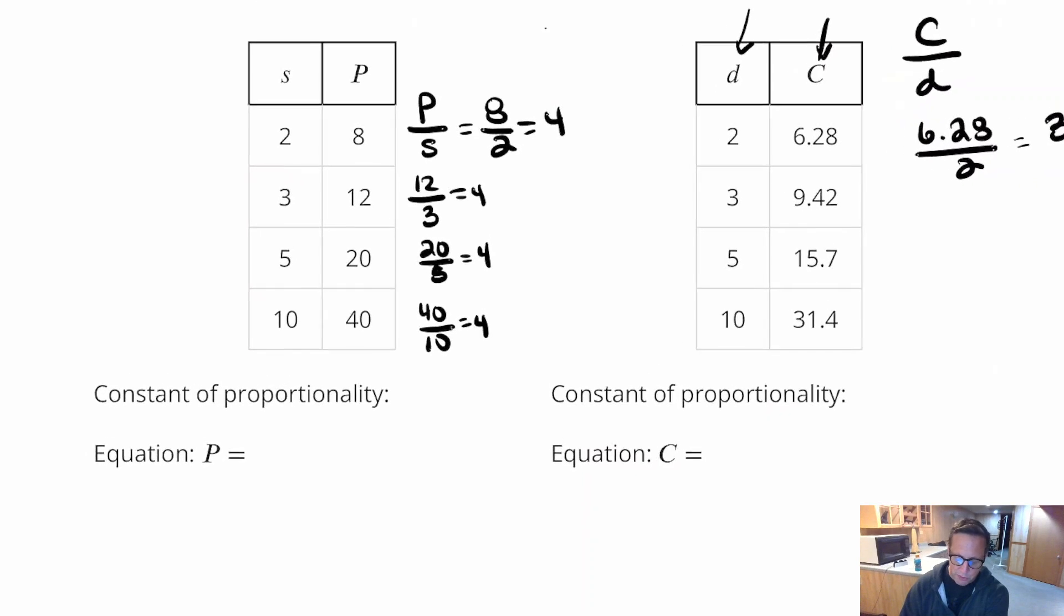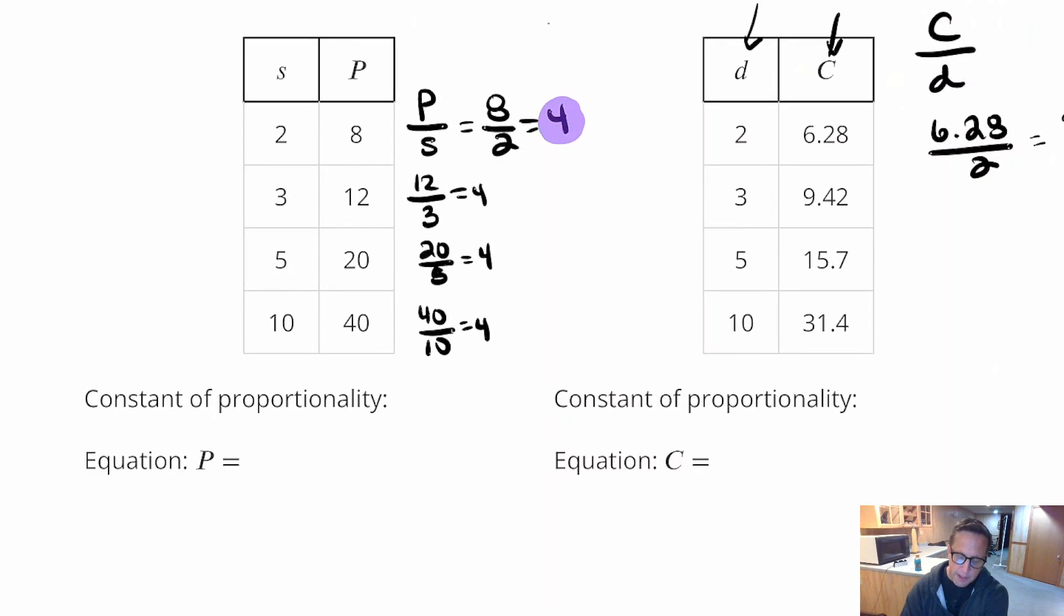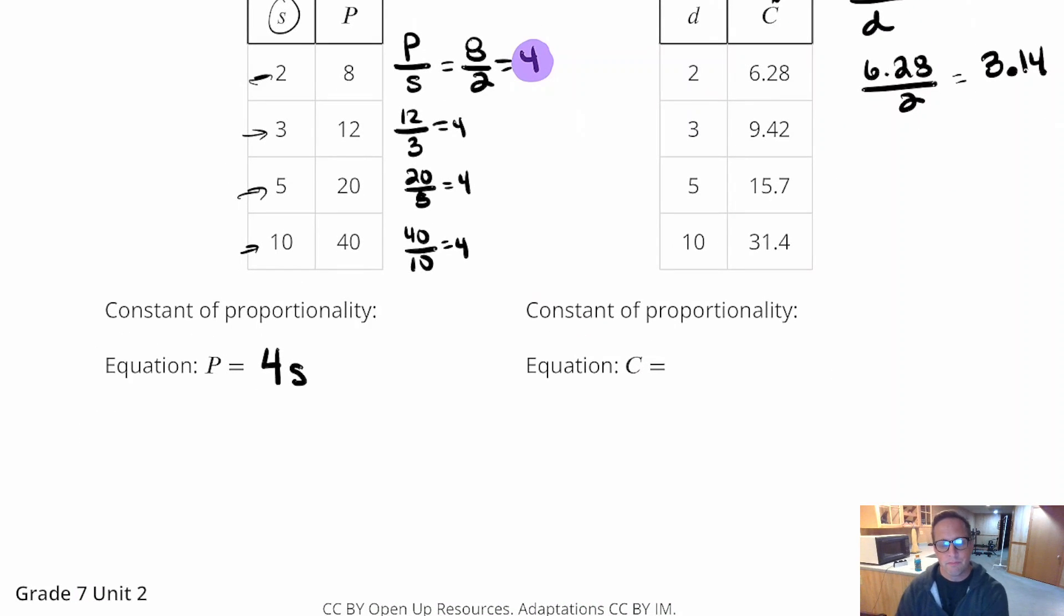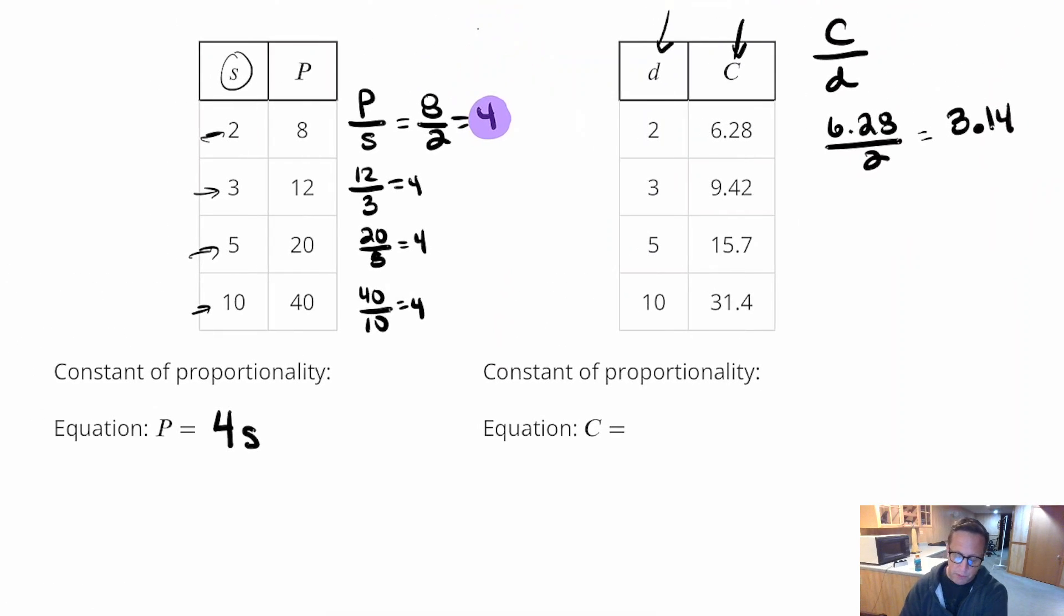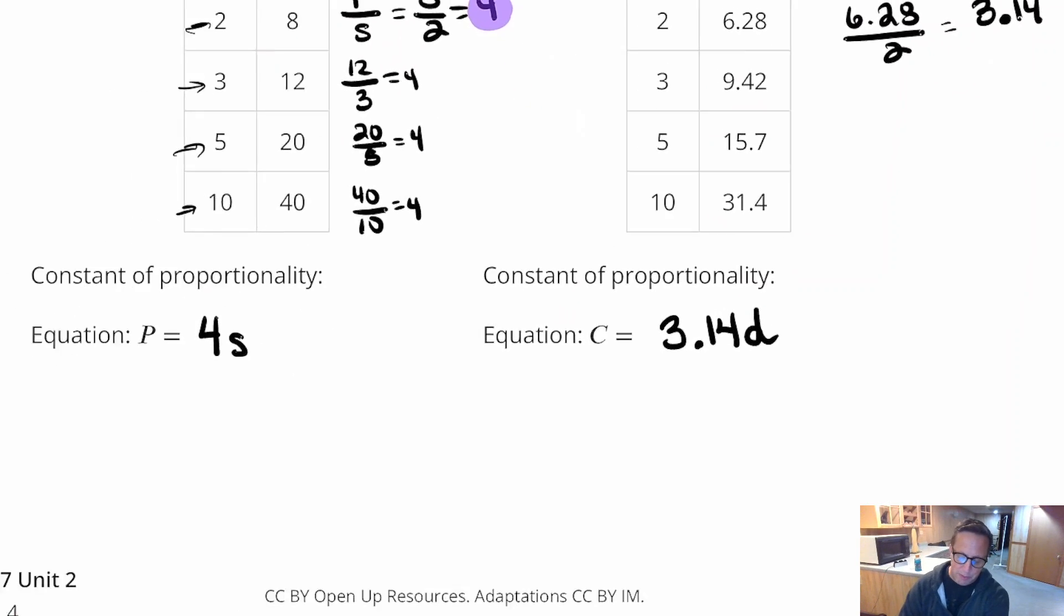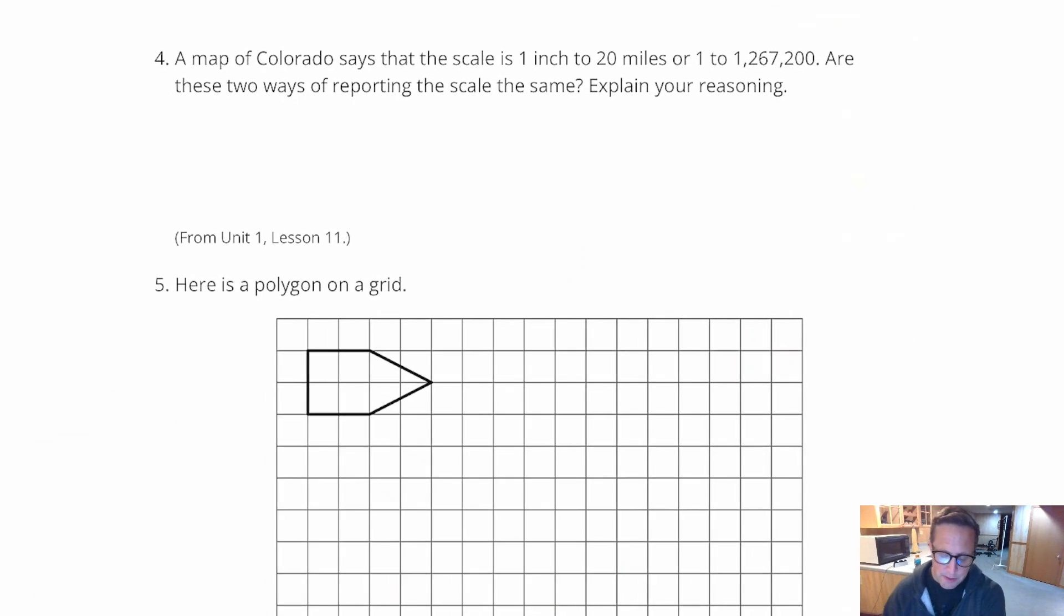Now we've got to turn this into an equation. This one had a constant proportionality of 4. So we're going to do P equals 4 times S. 4 times 2 is 8. 4 times 3 is 12. 4 times 5 is 20. 4 times 10 is 40. So there you go. P equals 4S. This looks like another math problem. Which kind of is. But, that's what it's asking for. It's asking for the equation. For this one, the constant proportionality was 3.14. It was basically pi. So, 3.14 times diameter. So circumference certainly does equal 3.14 times diameter. Pi times diameter is what that's going to be.